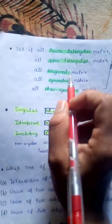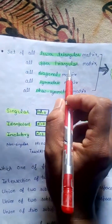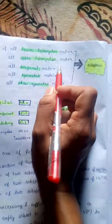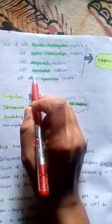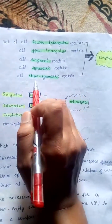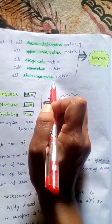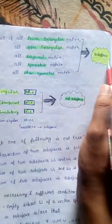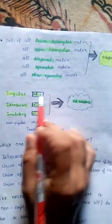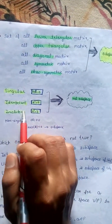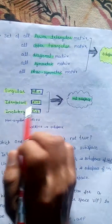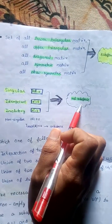Set of all lower triangular matrices, set of all upper triangular matrices, all diagonal matrices, all symmetric matrices, and all skew-symmetric matrices are subspaces. But singular matrices, idempotent matrices, and involutory matrices are not subspaces.